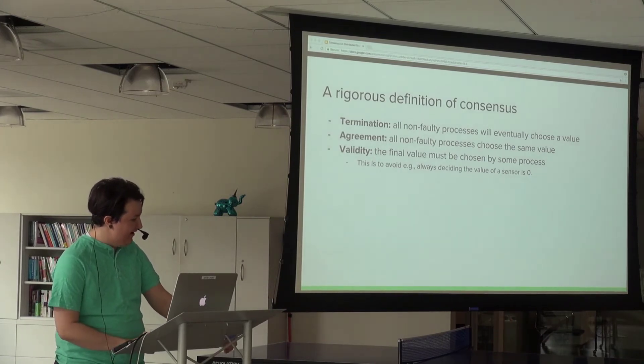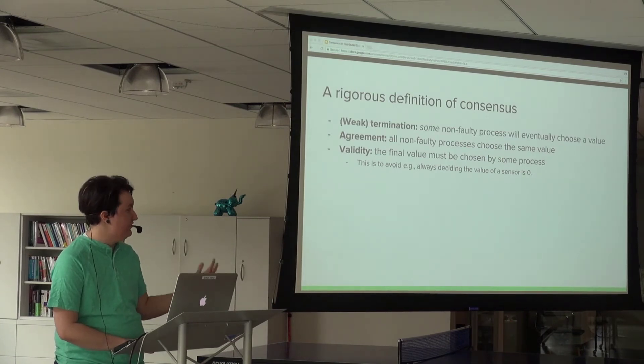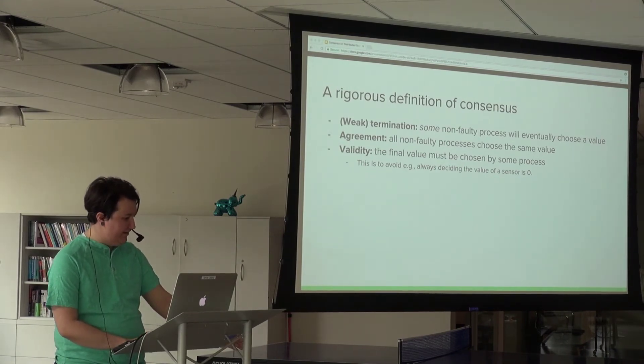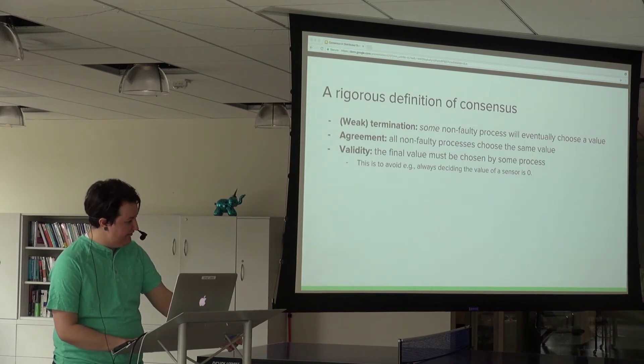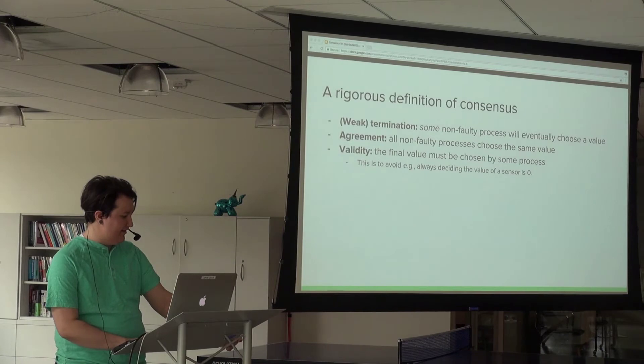We can actually weaken the definition of termination to say that some non-faulty process will eventually choose a value. It doesn't have to be every process, just some process. This is the definition of consensus we'll use to prove a nice result from the Fischer, Lynch, and Patterson paper.